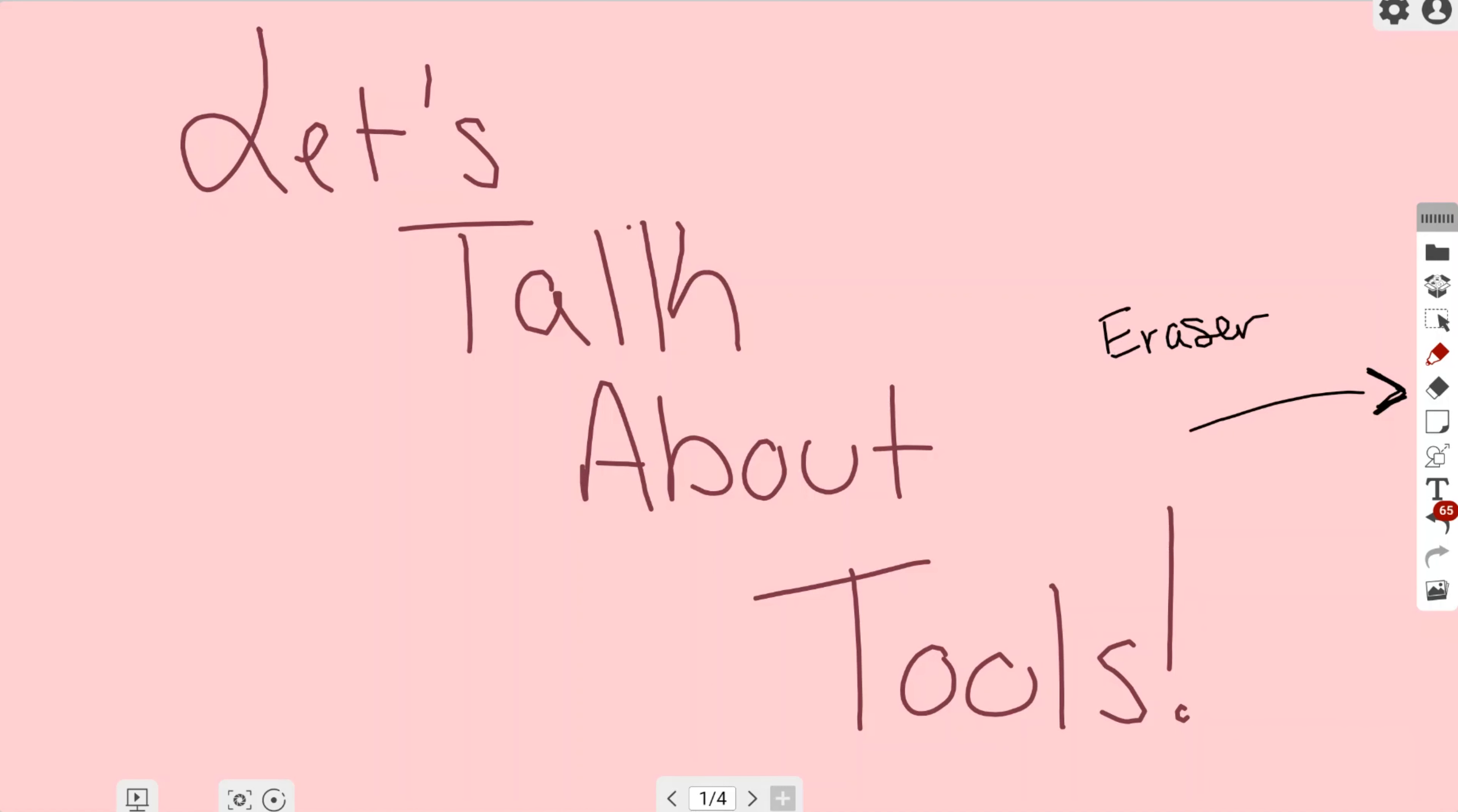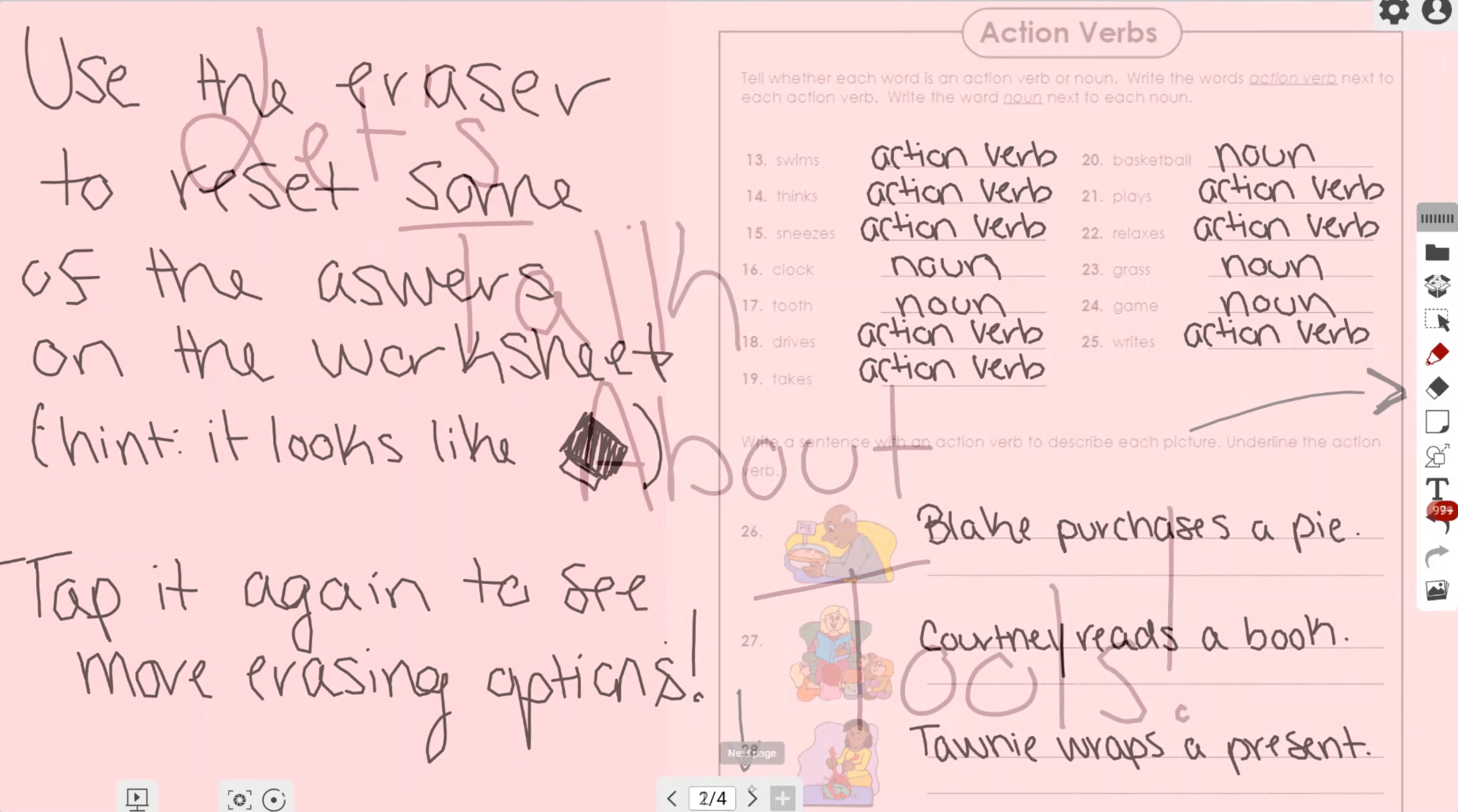As you can see, if I left-click it once, it activates the eraser tool, and from here I can erase anything on my canvas. Now I'm going to go to the next page to show you a little bit more about the eraser.